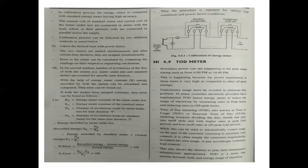If both meters have equal constants, then the error can be found as follows. Kr is the energy meter constant for the meter under test; Ka is the energy meter constant of the standard meter; Nr is the number of revolutions made by the meter under test for time duration T; Na is the number of revolutions made by the standard meter for time duration T. The energy recorded by the meter under test is Er = Nr / Kr, and the energy recorded by the standard meter is Ea = Na / Ka. The percentage error is equal to (Er − Ea) / Ea × 100.